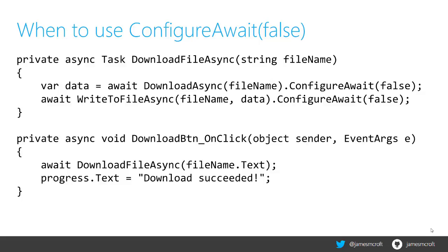In the second method — the download button on click — this is being called from the UI thread. The reason we're not setting ConfigureAwait(false) on this await of download file async is that on the next line you can see we're updating a text block's text with 'download succeeded'. If we did configure await false here, we would change the context of this method, and when that asynchronous method has finished and returned a result, when we hit the line setting the text to 'download succeeded' we would get an exception thrown because the UI is not being updated on the UI thread — we're no longer on it. By not configuring await false, it allows us to carry on once that task is completed and run on the UI thread.